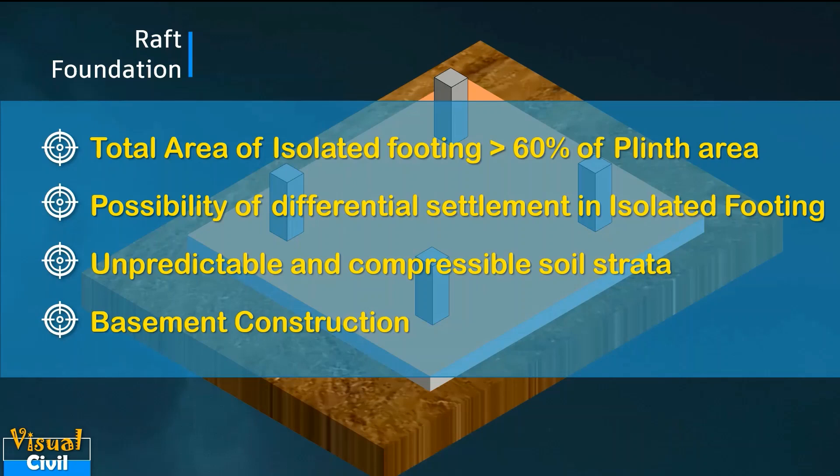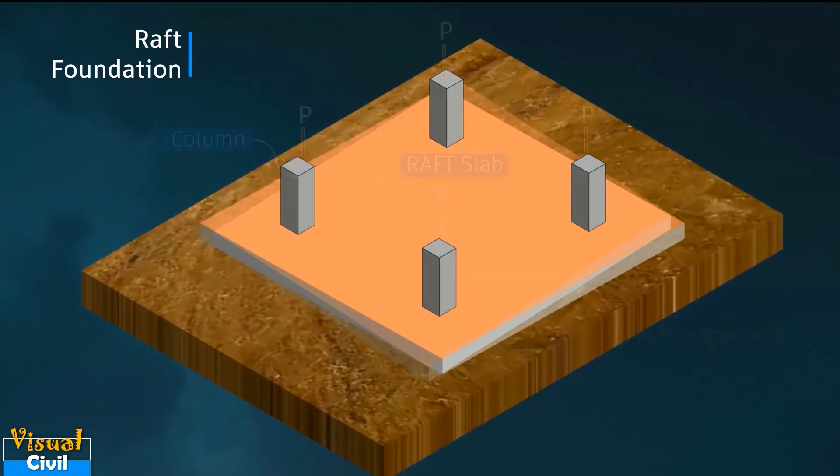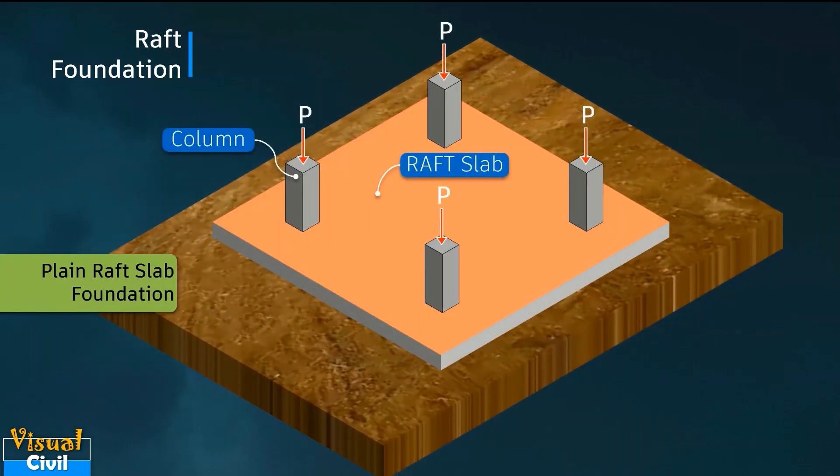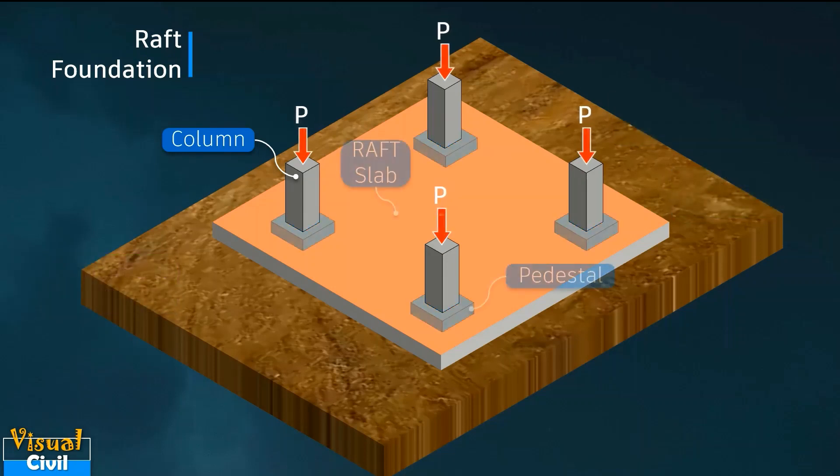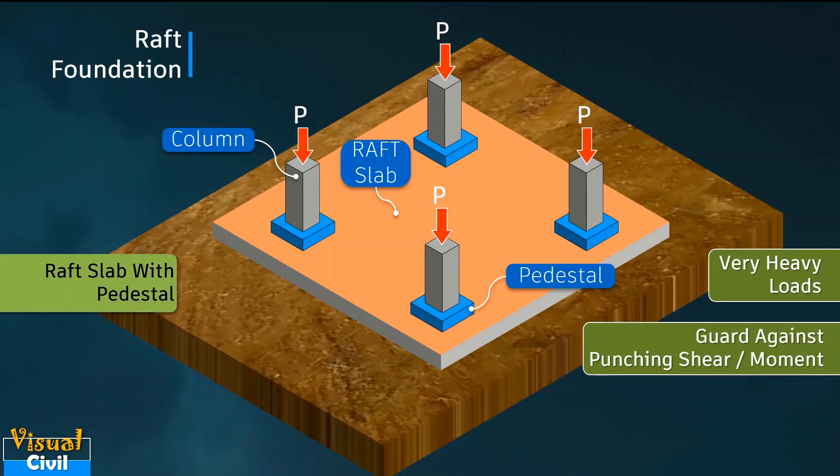A plain raft slab is opted for fairly small and uniform column spacing with relatively light loads. But if columns are subjected to very heavy loads, then pedestal is provided under the column to protect against punching shear and negative moments.